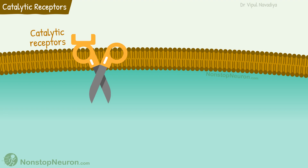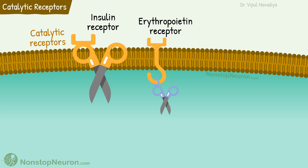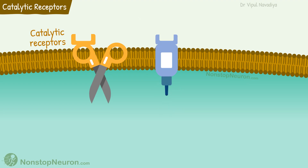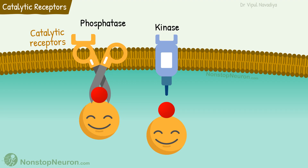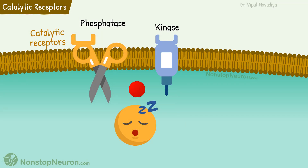Now, catalytic receptors. As per the name, they have enzymatic activity. Some of them are catalytic themselves — like insulin receptors — while others are not catalytic themselves but associate with other proteins that are catalytic, for example receptors for erythropoietin. Such receptors catalyze a wide range of reactions, but mostly the catalytic activity is kinase, which adds a phosphate group to a substrate, or phosphatase, which removes the phosphate group. This addition or removal of a phosphate group works like a switch that activates or inactivates the substrate protein.